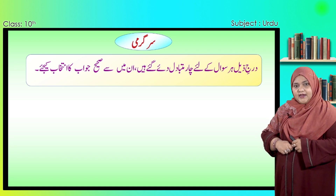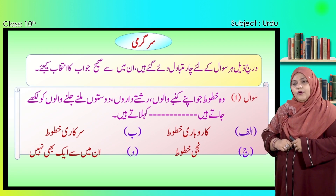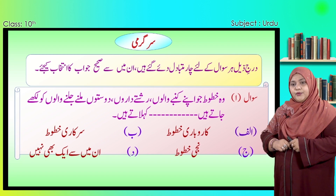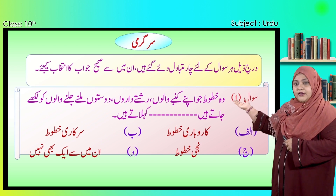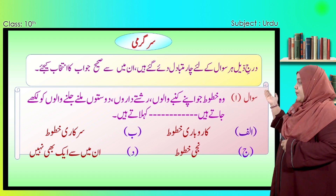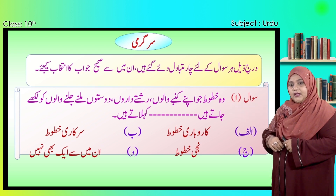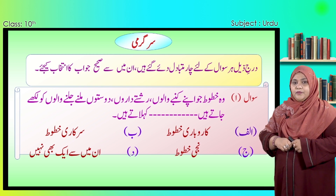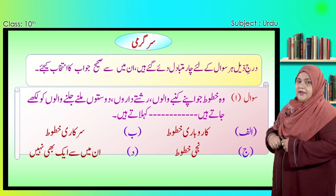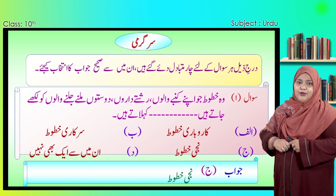عزیز طلبہ و طالبات، اب ہم اس پر ایک چھوٹی سی سرگرمی حل کریں گے۔ ہر سوال کے لیے چار متبادل دیے گئے ہیں، ان میں سے صحیح جواب کا انتخاب کیجیے۔ تو کیا آپ تیار ہیں؟ تو پہلا سوال یہ ہے: وہ خطوط جو اپنے گھر والوں، دوستوں اور ملنے جلنے والوں کو لکھے جاتے ہیں، انہیں کیا کہتے ہیں؟ الف: بے سرکاری خطوط، ب: کاروباری خطوط، جیم: نجی خطوط، دال: ان میں سے ایک بھی نہیں۔ بتائیے کہ صحیح جواب کیا ہے؟ شاباش! صحیح جواب ہے جیم: نجی خطوط۔